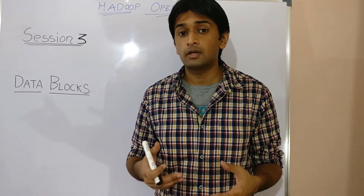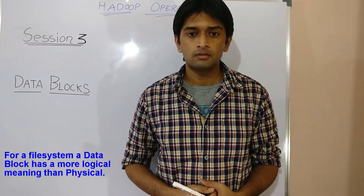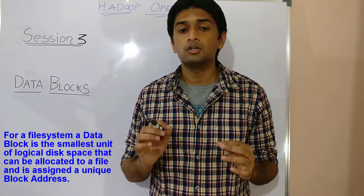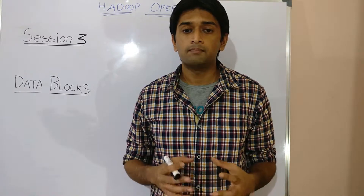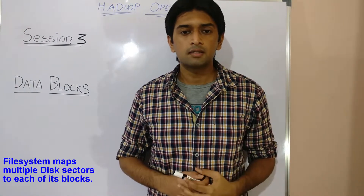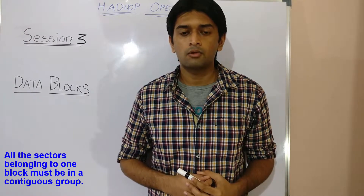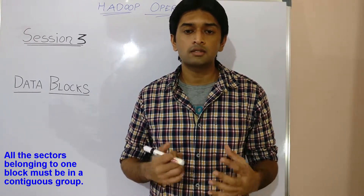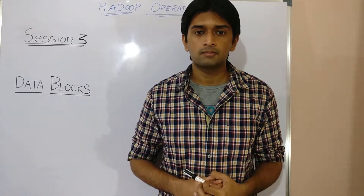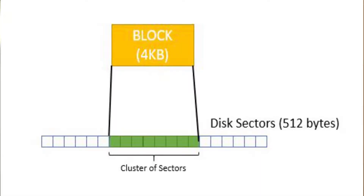An OS file system brings about a layer of software abstraction on the physical blocks. Hence, for a file system, a data block has a more logical meaning than physical. A file system data block is basically the smallest unit of logical disk space that can be allocated to a file and is assigned a unique block address. A file system block size may or may not be equal to the disk sector size — typically it is a multiple of disk sectors. The file system is responsible for mapping multiple disk sectors to each of its data blocks, and all the sectors mapped to one file system data block must always be in a contiguous group, also called a cluster of sectors. The default block size of most modern file systems is 4KB, and one 4KB file system block would be mapped to eight contiguous 512-byte sectors as shown in this diagram.